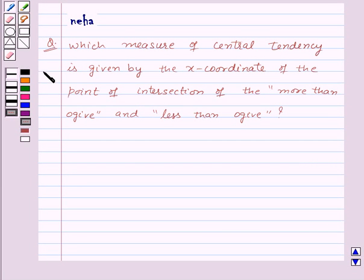Hi and welcome to the session. Today we will discuss the following question: which measure of central tendency is given by the x-coordinate of the point of intersection of the more than ogive and less than ogive? Let's see its solution.